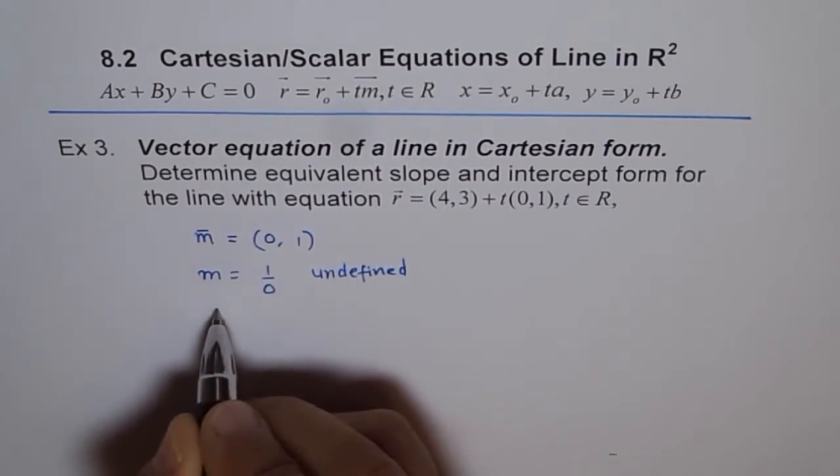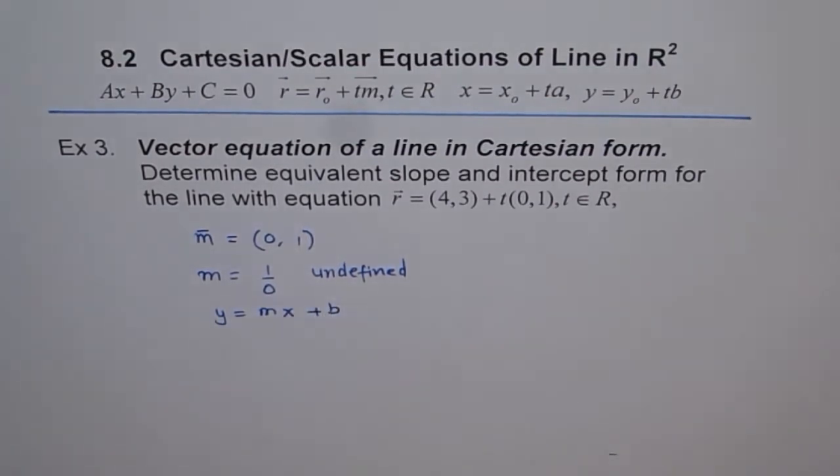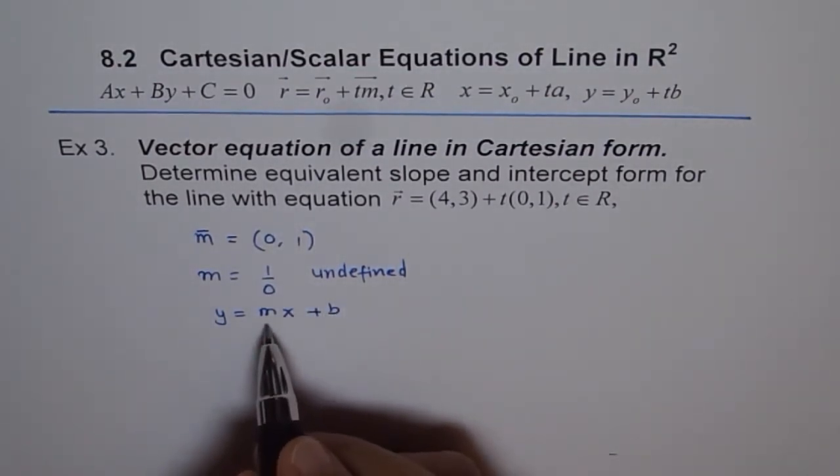So if the slope is undefined, we cannot write the equation in the form of y = mx + b, correct? Because m is undefined.